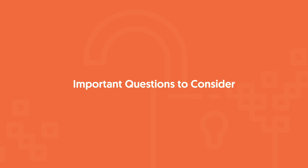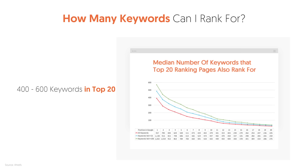As you're doing your keyword research, there are some important questions to consider. Here's an interesting chart from Ahrefs, which has one of the biggest databases of SEO data out there. They looked at the median number of keywords that top 20 ranking pages also rank for — and as you can see, it's hundreds. That means any given page on your website doesn't just have to focus on one or two keywords; you can focus on hundreds and hundreds of keywords. So don't just focus on one or two — you should be focusing on hundreds.